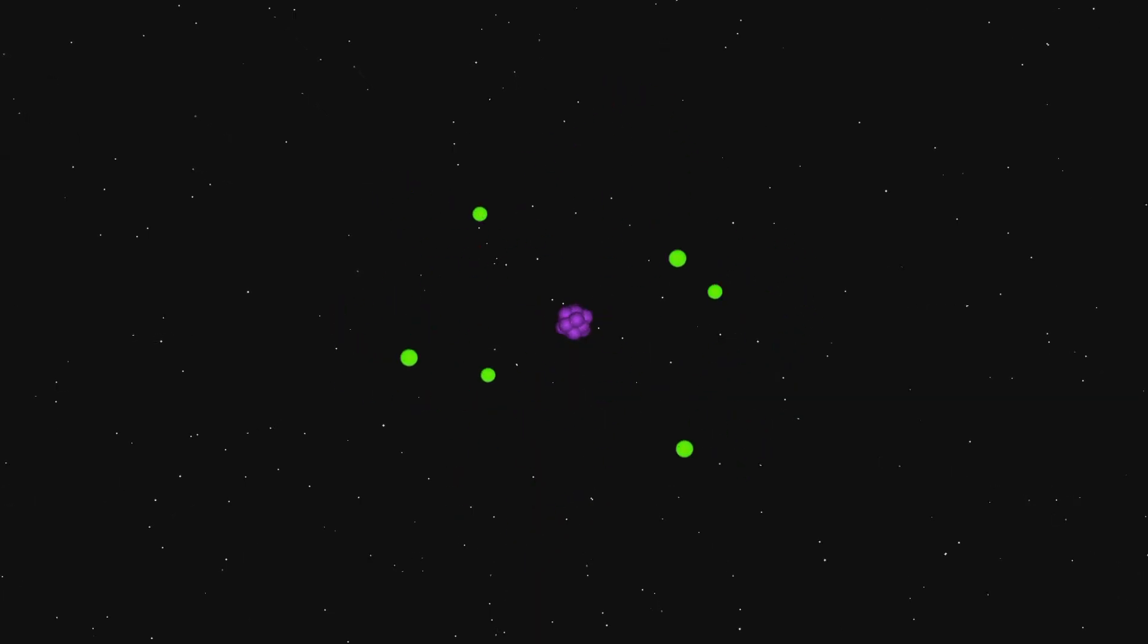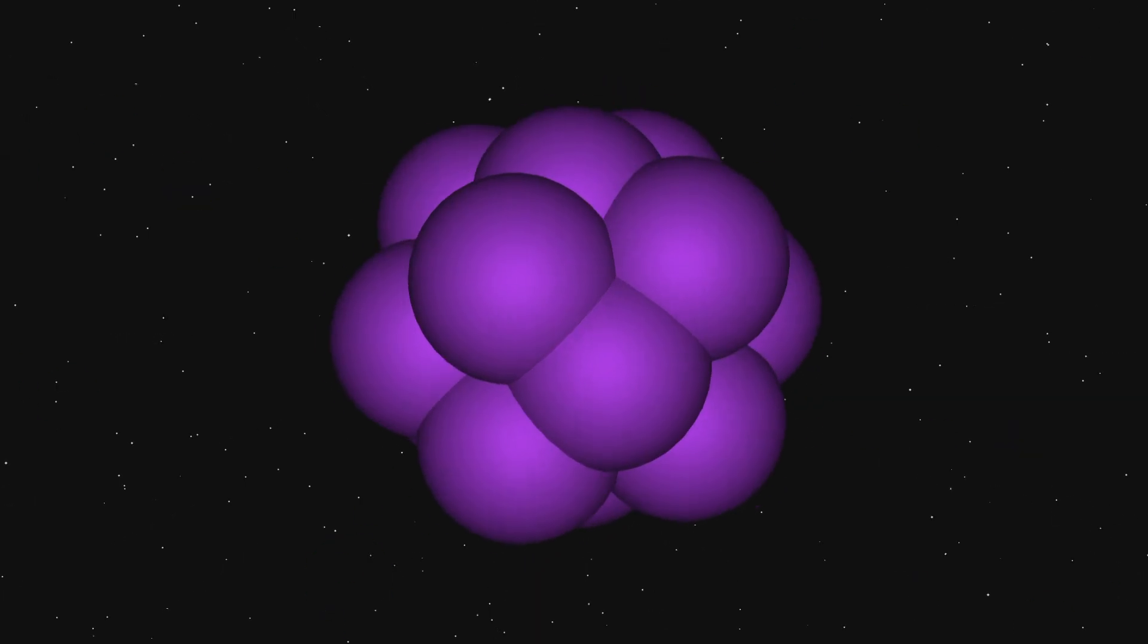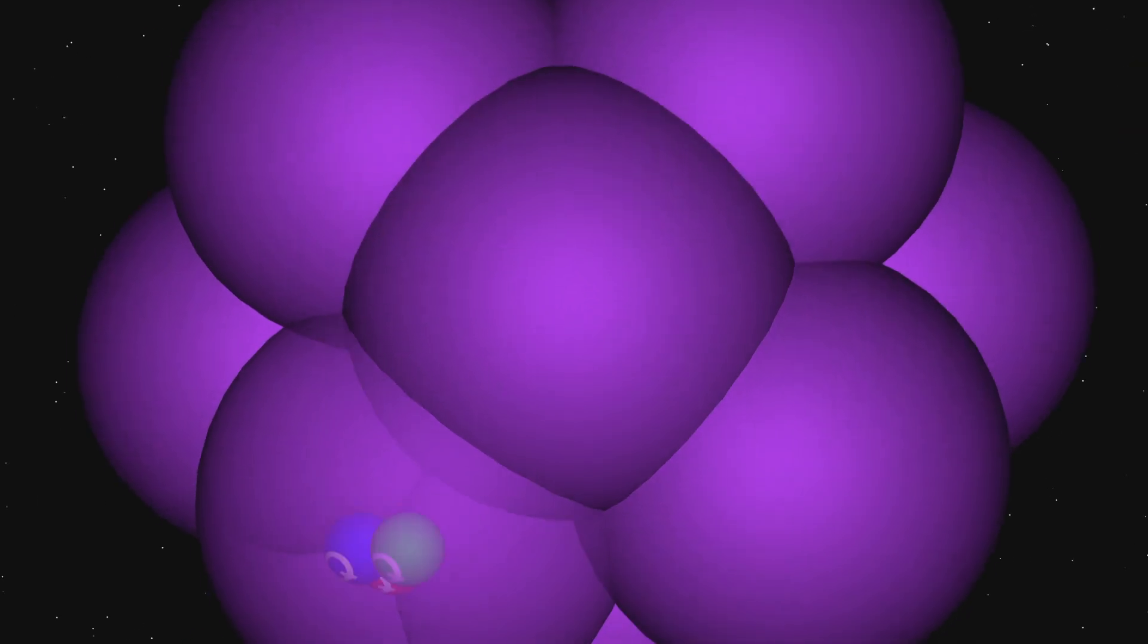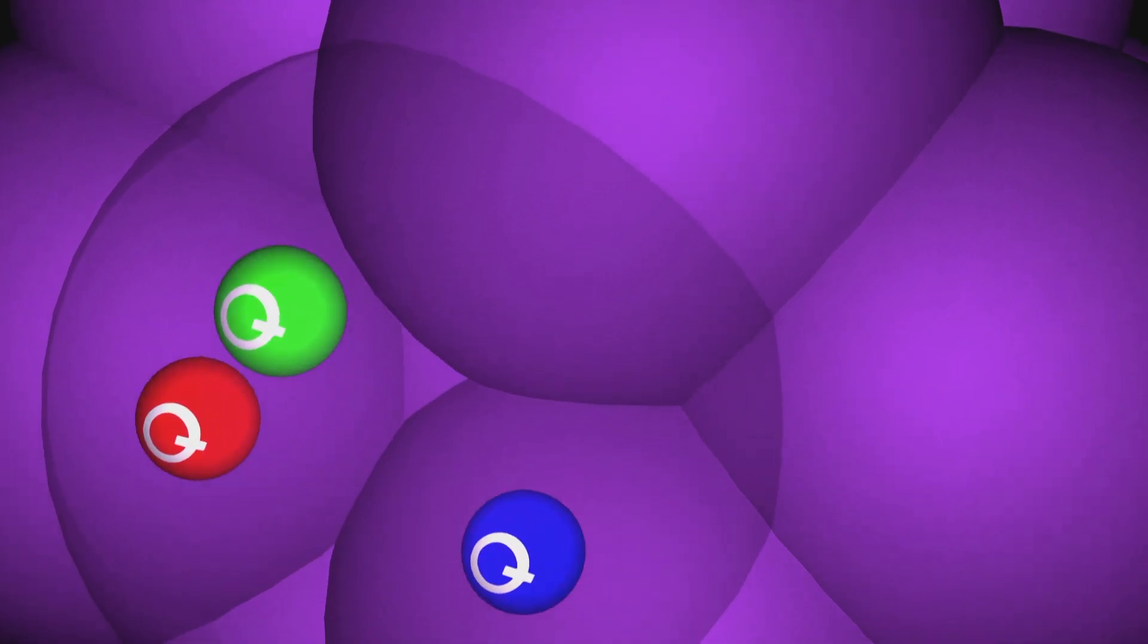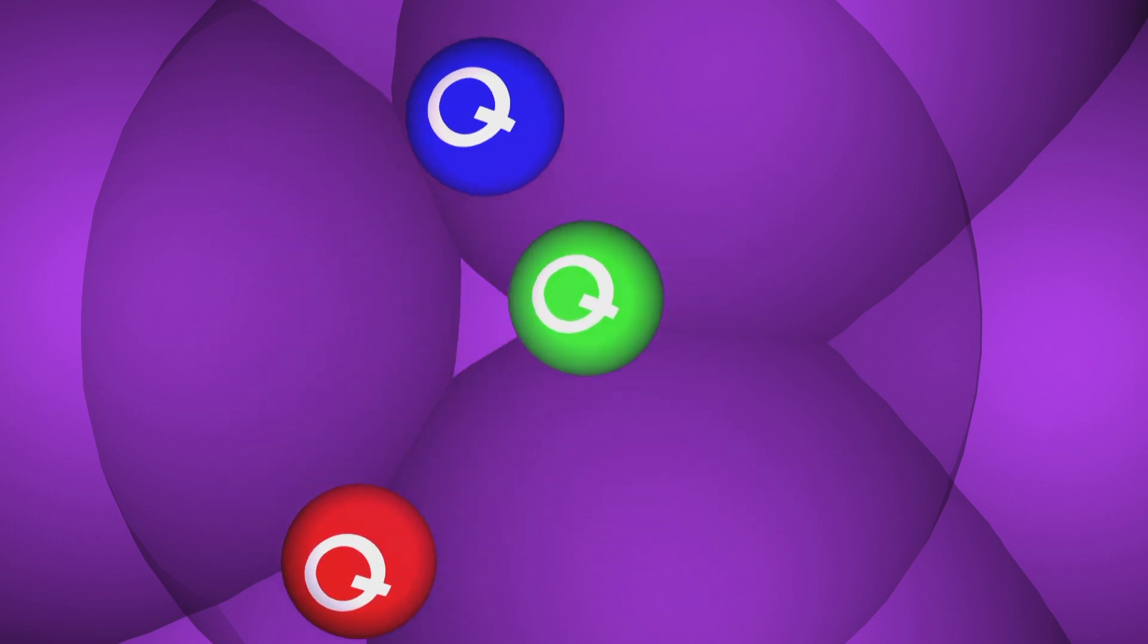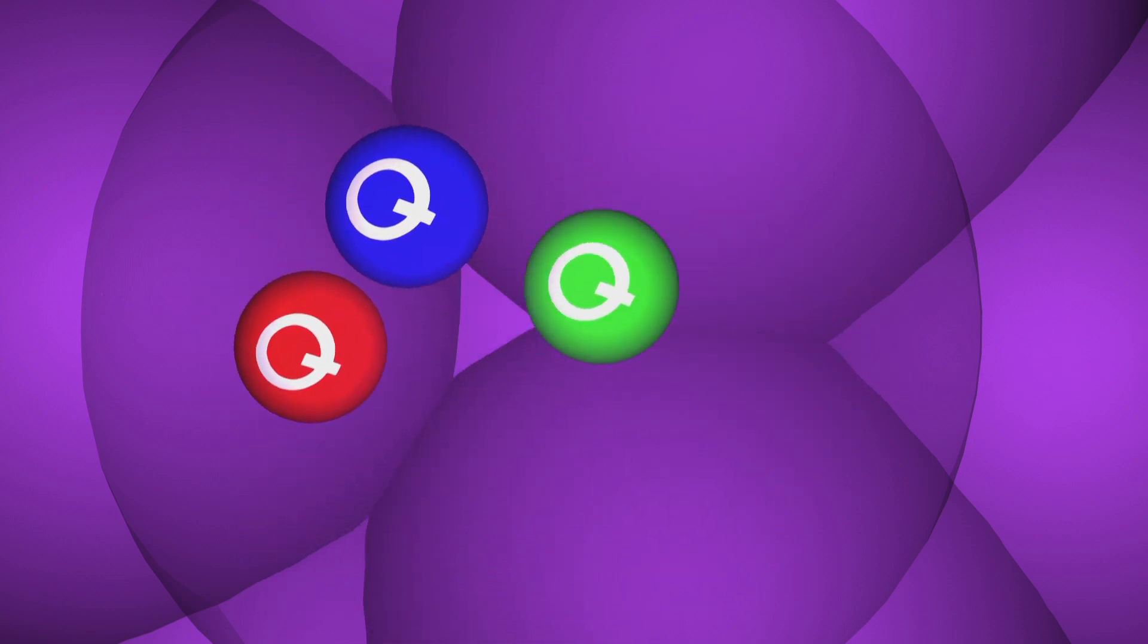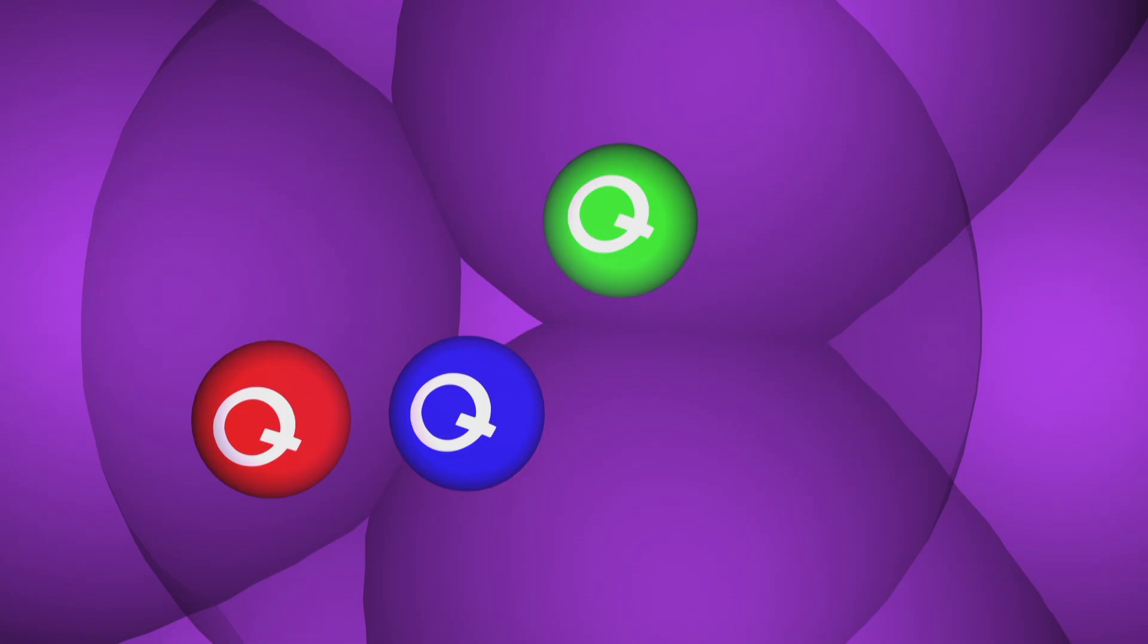To begin with, we know that the tiny protons and neutrons at the center of atoms are made of even smaller particles called quarks. Quarks were proposed in 1964 and proven to be real in the 1970s. The existence of quarks is well established science.